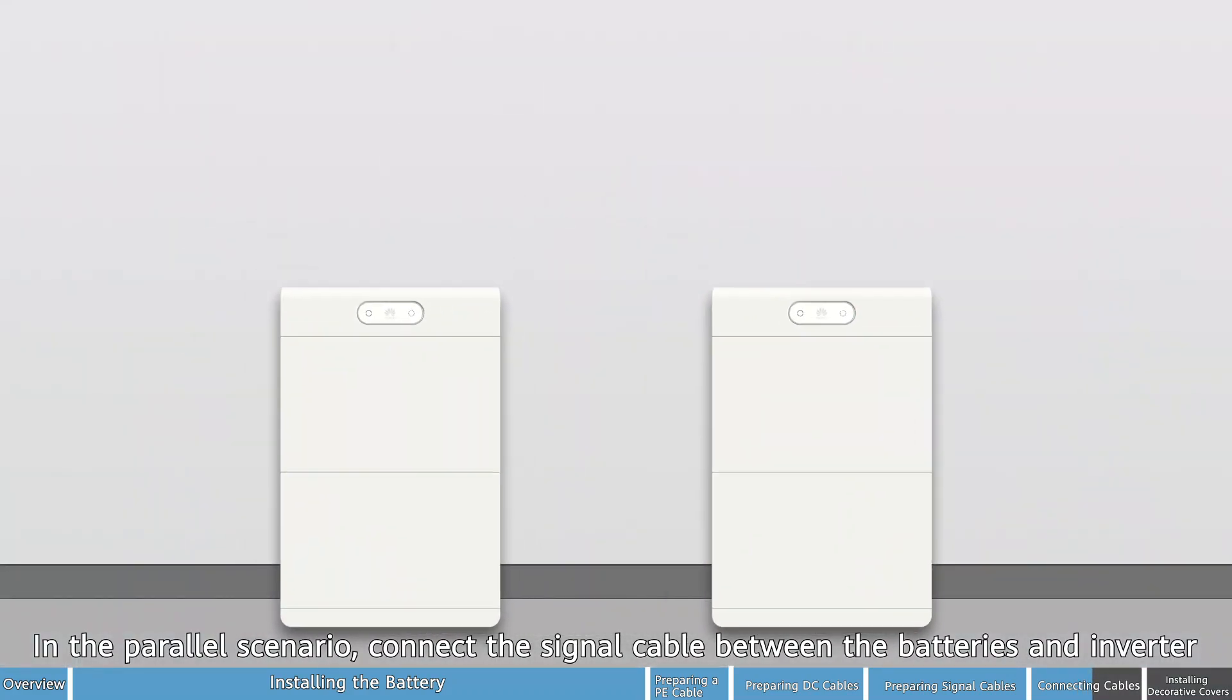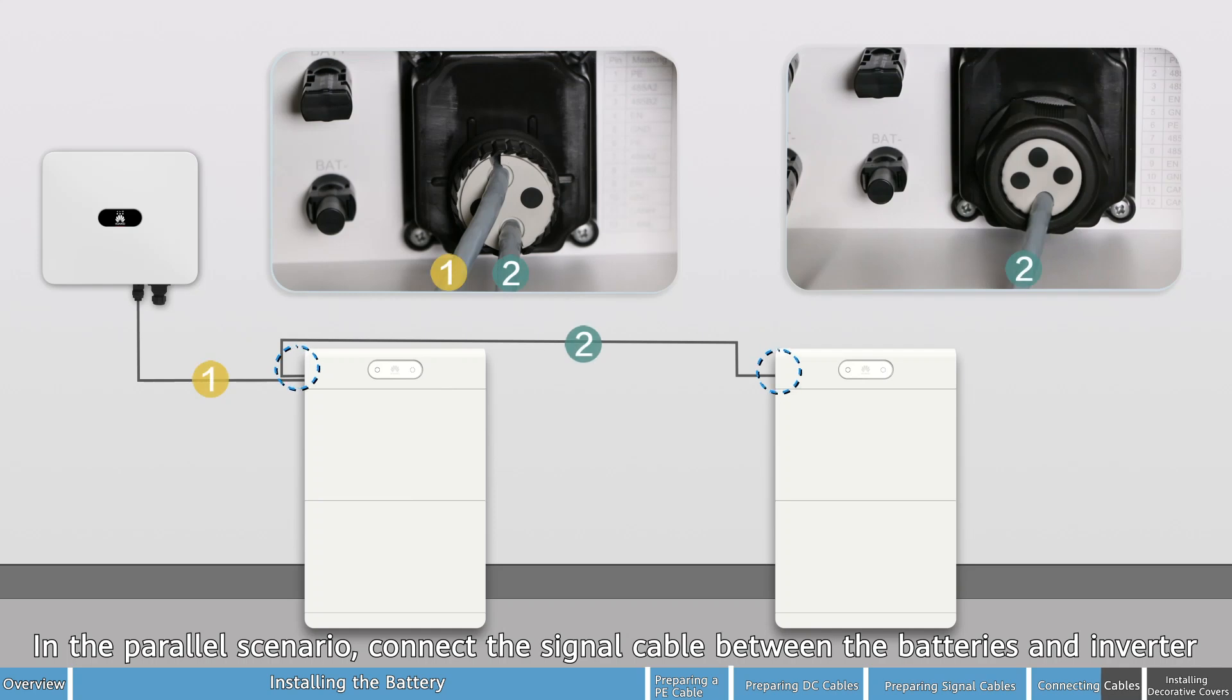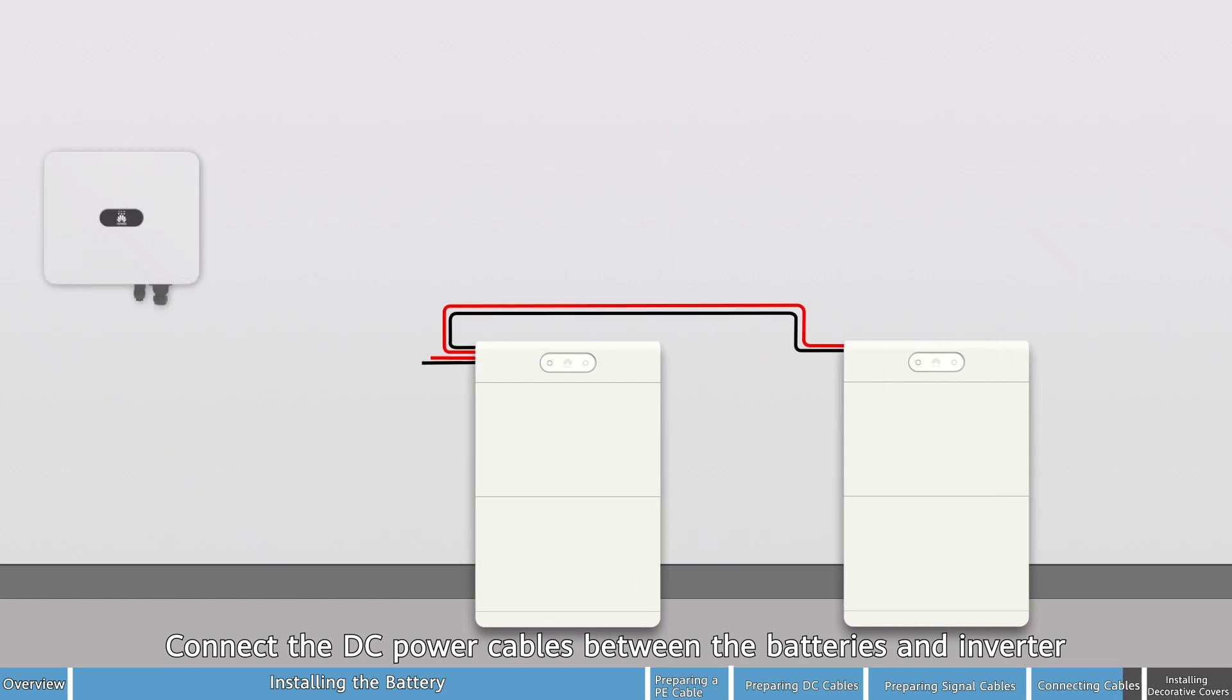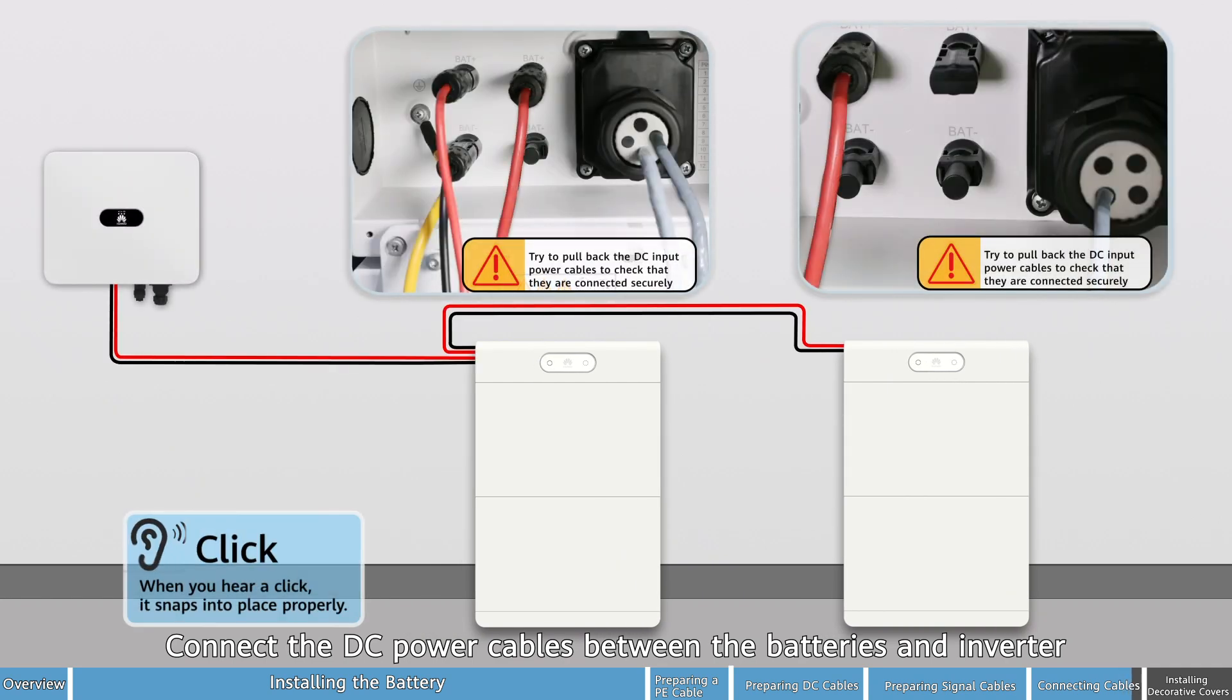In the parallel scenario, connect the signal cable between the batteries and inverter. Connect the DC power cables between the batteries and inverter.